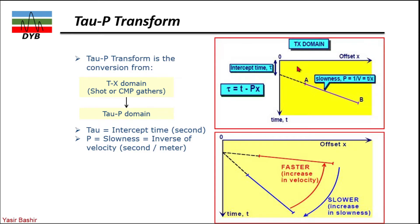In the t-x domain, we have time on one axis and offset on the other. When we convert into tau-p domain, the y-axis remains time but the x-axis represents slowness. Faster velocity corresponds to lower slowness, and slower velocity corresponds to higher slowness. This is how the data looks in the tau-p domain.